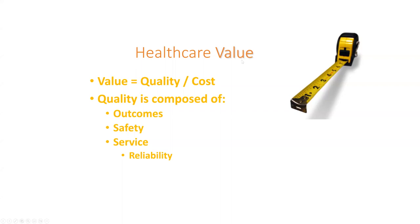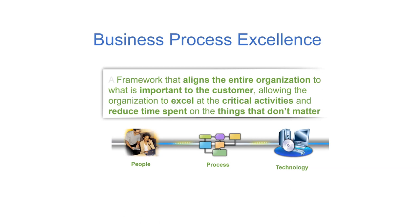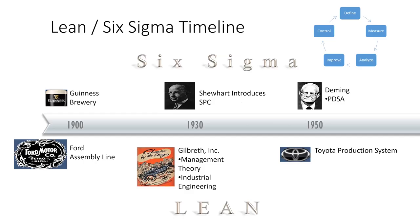We define healthcare value as quality over cost, composed of outcome, safety, service, and reliability. Kaplan and Norton said in The Balanced Scorecard: 'You can't manage what you can't measure. You can't measure what you can't describe.' That's how I got into ontology — because I wanted to do all these things. What we're doing in informatics is taking people and technology and bringing them together through process. The government health IT journal during the Obama administration said my lab was doing exactly what the country needed.